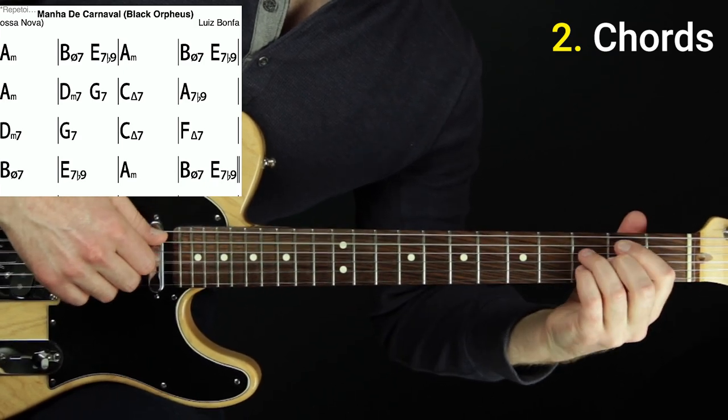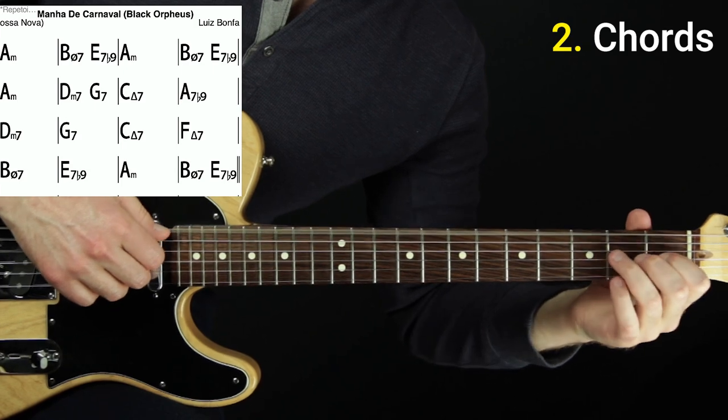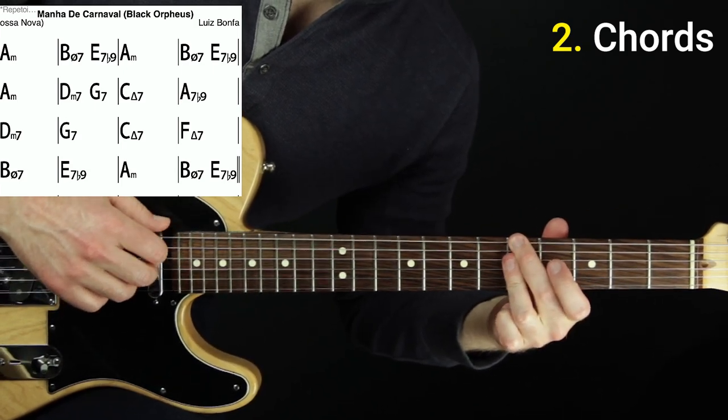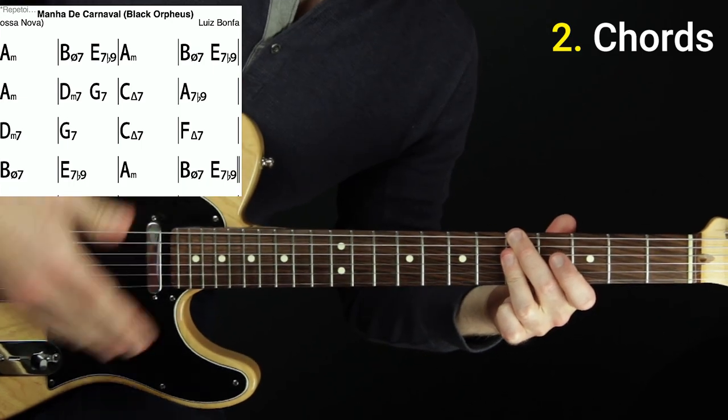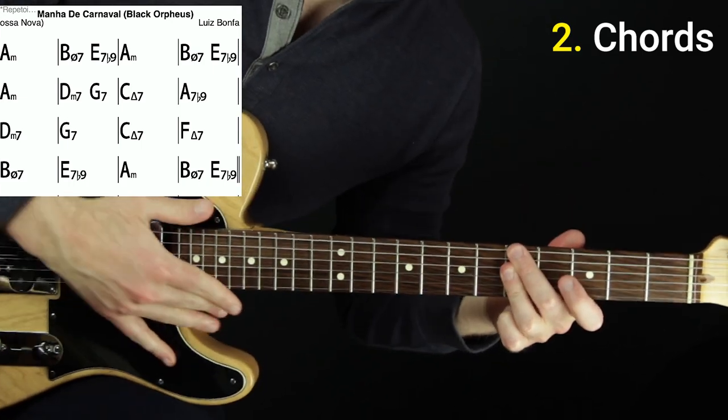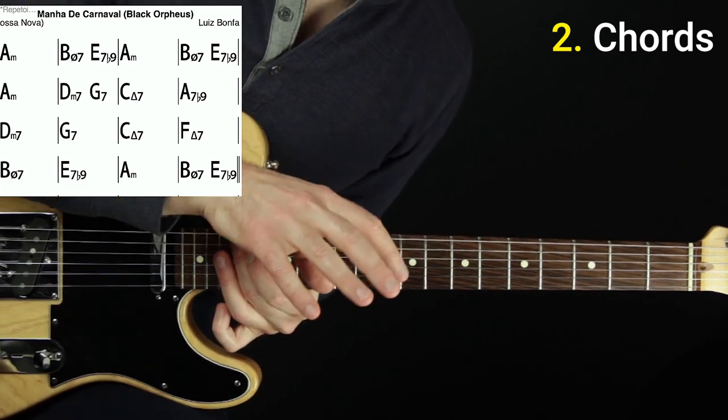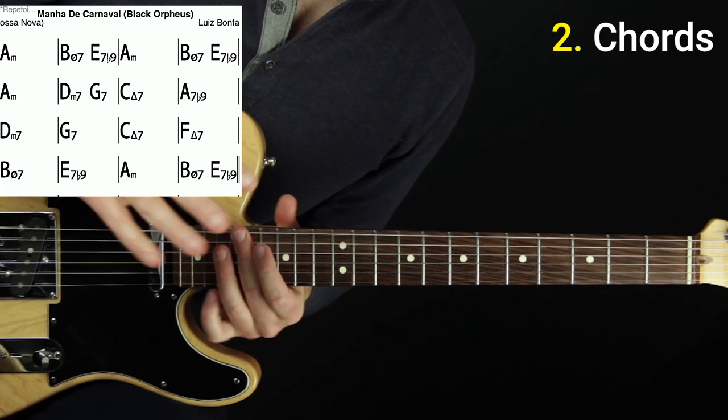And then back to B half diminished. E7. Leading back to A minor again. So just wanted to give you the chords here and show you. And so we can hear them. If you don't know the shapes I'm playing or how to play that, don't worry about it. I'm going to give you shapes here for the chord melody part. Just wanted us to review the melody, review the chords.